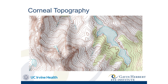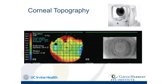We measure this using topography, similar to hiking maps where the closer the lines are together, the steeper that area is. We shine light in rings on the cornea and see how close they are. Because it gets hard to interpret those rings directly, a computer analyzes the data and puts it into a color format, which is what doctors pull up when you go in for your scan.